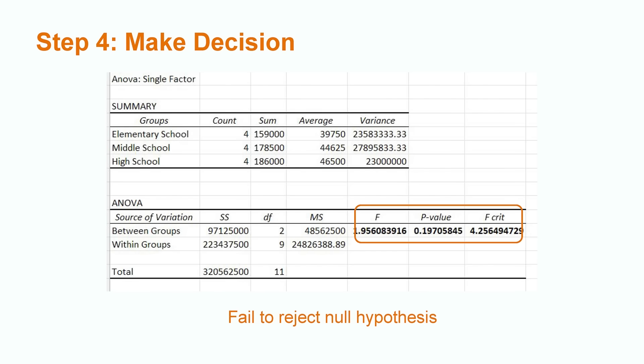Because our p-value of 0.1971 is above 0.05, we fail to reject the null hypothesis. Our test statistic, 1.96, is also below the critical value of 4.26.